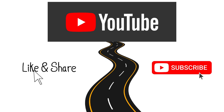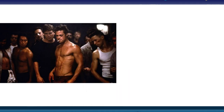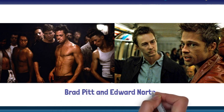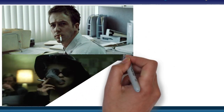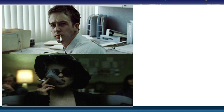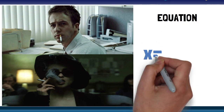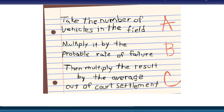The third movie is Fight Club — a classic violent drama with Brad Pitt and Edward Norton. Norton's character is a recall coordinator for a major car company. On a plane, he explains a simple equation that helped the company calculate whether or not to do a recall: X equals A times B times C, where A is the number of cars in the field, B is the probable rate of failure, and C is the average out-of-court settlement. If X is less than the cost of the recall, the company wouldn't do one.